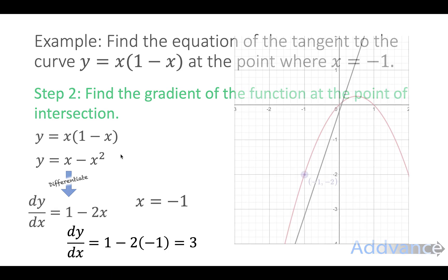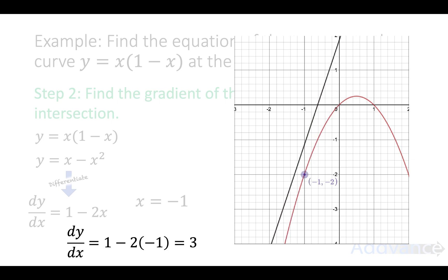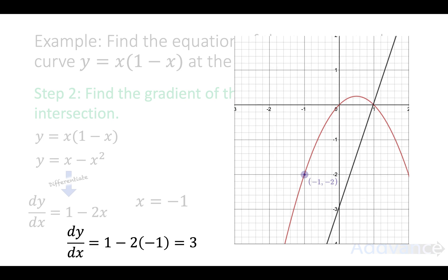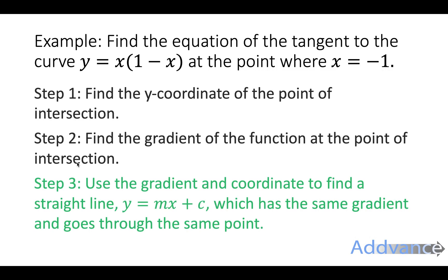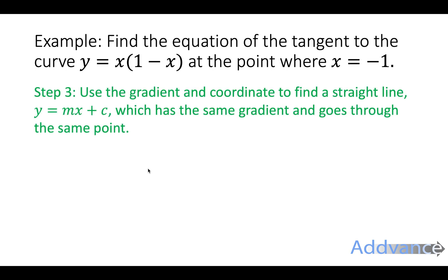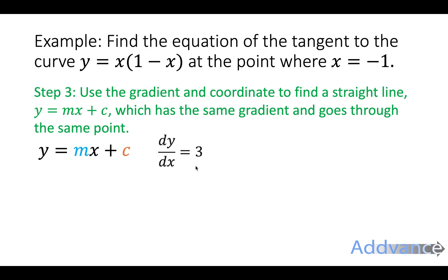I've drawn a black line here that has a gradient of 3, and you should be able to see that it's roughly parallel to the curve at that point. But we don't yet know how high or low that black line sits, so we're going to find the + c on the end of the equation to shift the black line so it passes through the point (−1, −2).